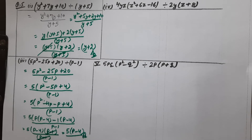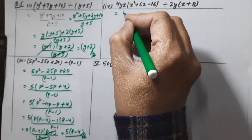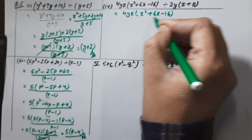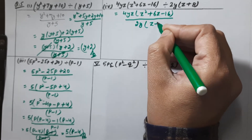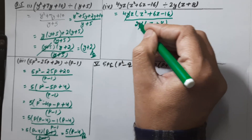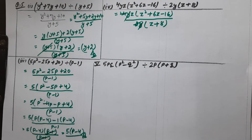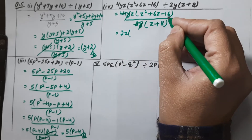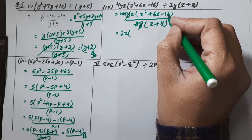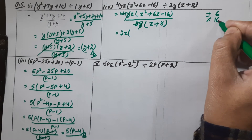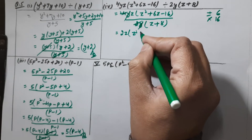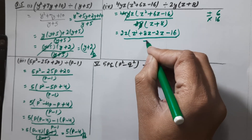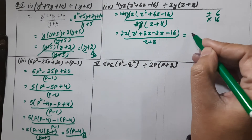Now we are moving to the fourth part, which is also very easy. The numerator is z squared plus 6z minus 16, and the denominator is 2z into (z plus 8). Splitting the middle term: we need factors that add to 6 and multiply to minus 16, which gives plus 8 and minus 2. So we get 2z: plus 8z minus 2z minus 16.